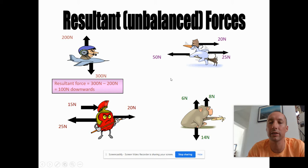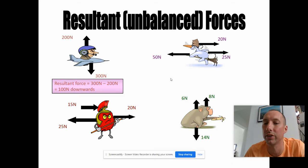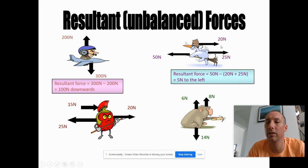Have a look at this next one. What's the resultant force going to be? If I took these three forces away and replaced them with a single force, what force would do exactly the same job? Hopefully you got five Newtons to the left. The 20 and the 25 are acting in the same direction, so we add those together: 20 plus 25. Then we subtract from the biggest force, which is 50 in this direction: 50 minus 45 gives five Newtons. The resultant force is always in the direction of the biggest force.